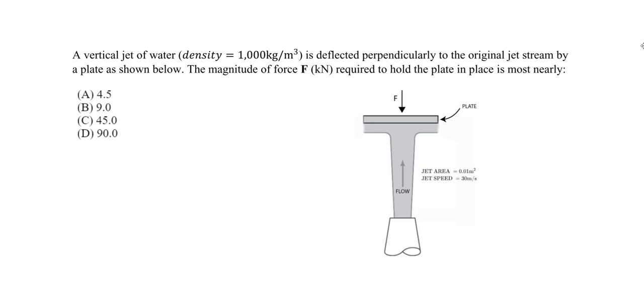So for this example we're told we have a vertical jet of water with a density of 1000 kg per cubic meter is deflected perpendicular to the original jet stream by a plate as shown below. So this is our plate here. And we have the flow and this is our jet. So let me denote that. This is going to be the jet.